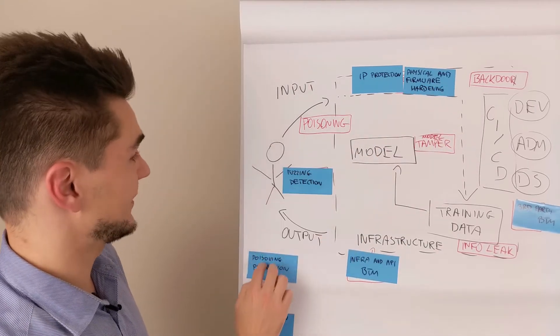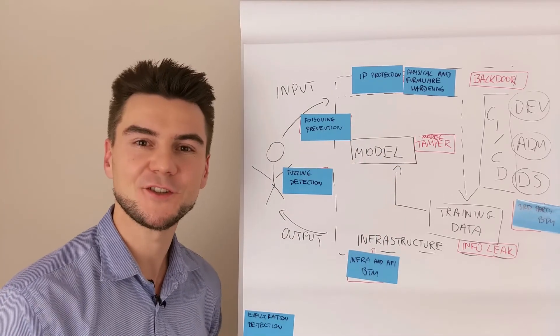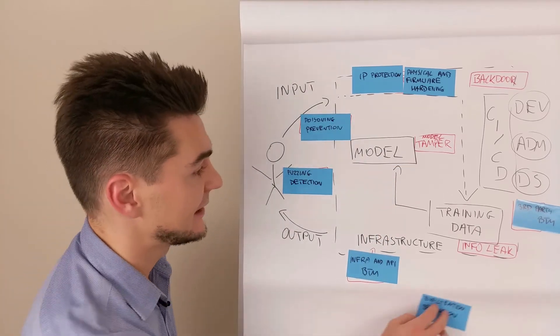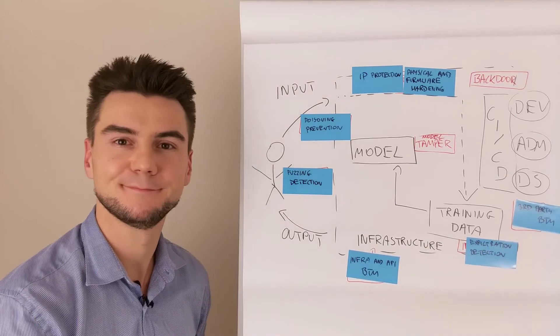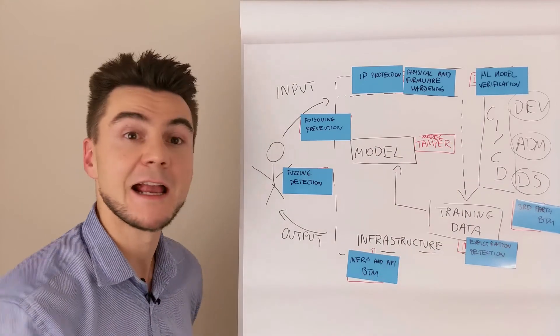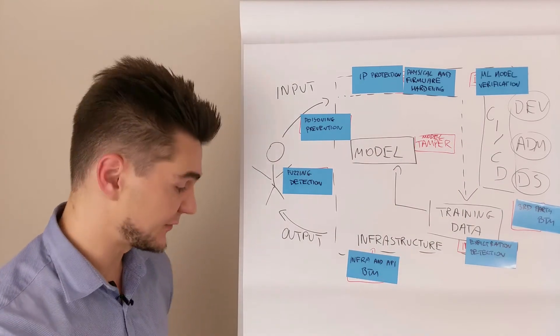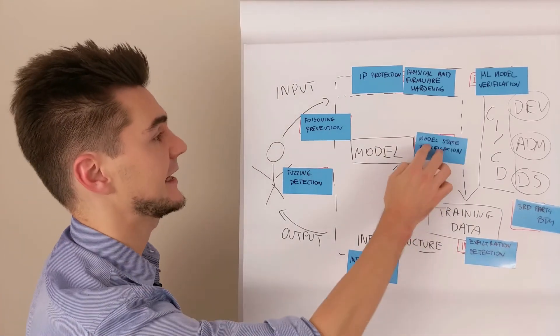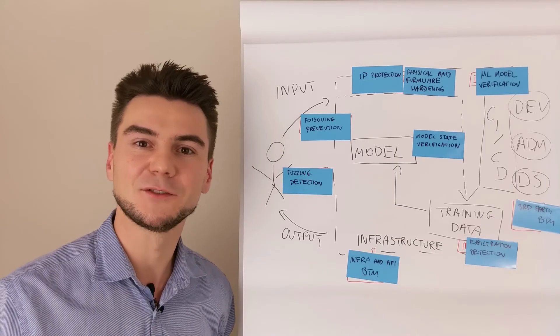Fuzzing detection and also poisoning prevention. Exfiltration detection and prevention in case of information leak. And machine learning model verification in the very beginning, and also verification of the model state in case of model tampering.